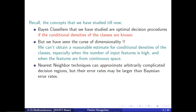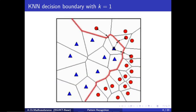Then we discussed about nearest neighbor techniques, which can approximate arbitrarily complicated decision regions, but their error rates may be larger than Bayes error rates. Let's have a look into this example. This is the nearest neighbor classifier. In general, when k equals 1, KNN is called as the nearest neighbor classifier.